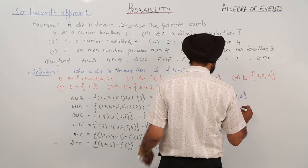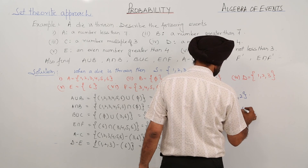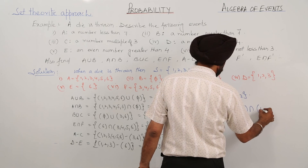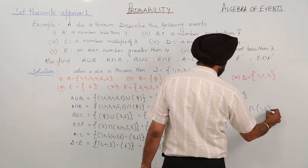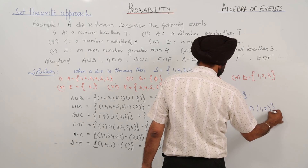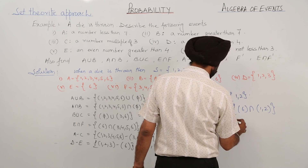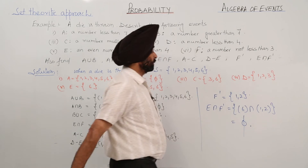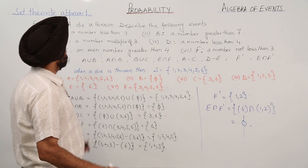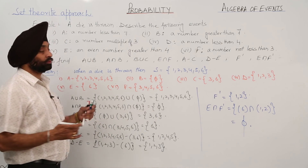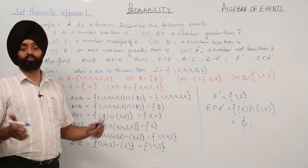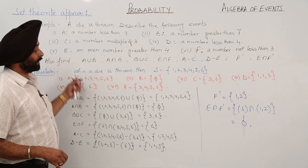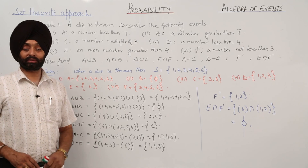E is {6} and F' is {1, 2}, so E intersection F' will be empty (∅). This is all about some very simple events and their results.